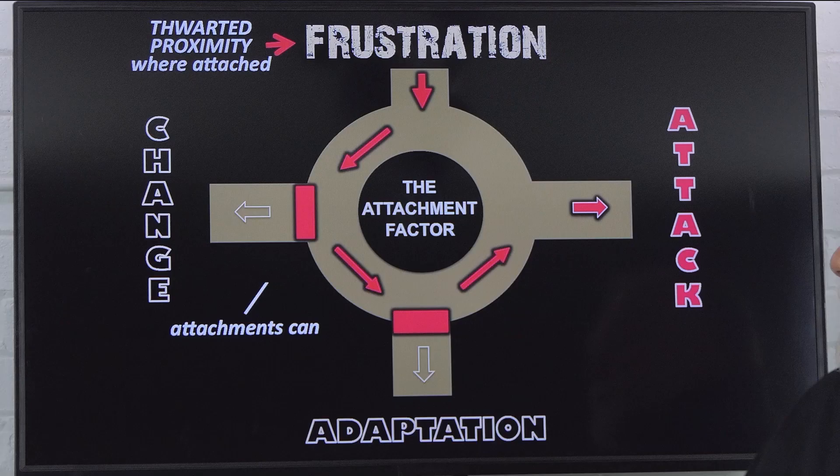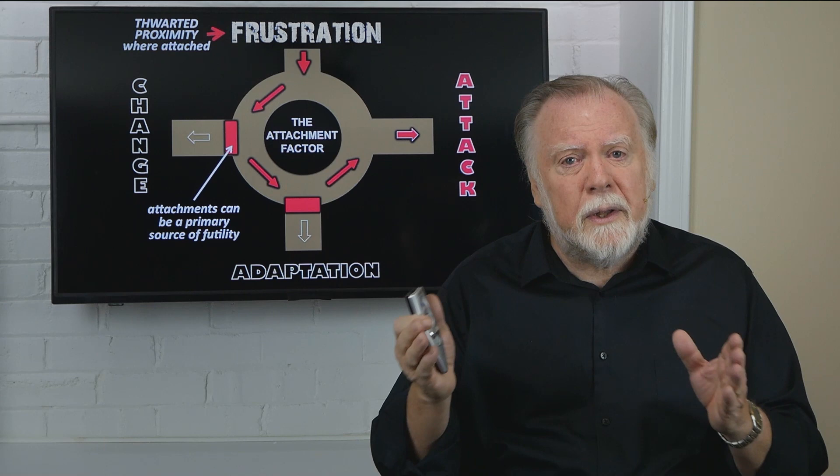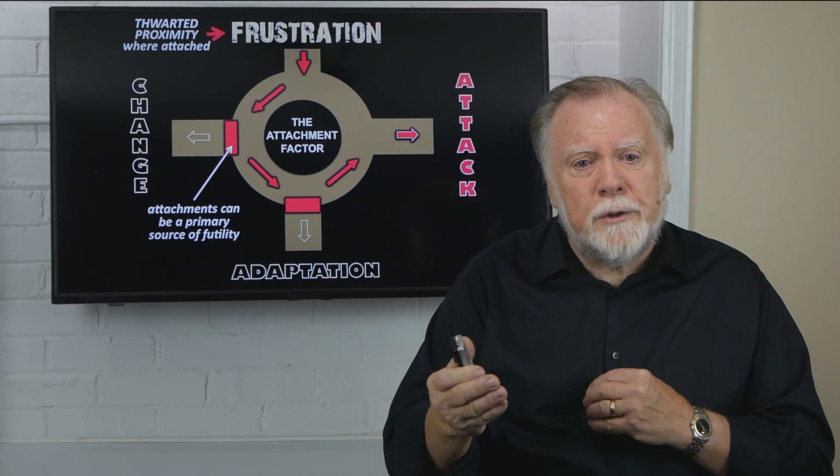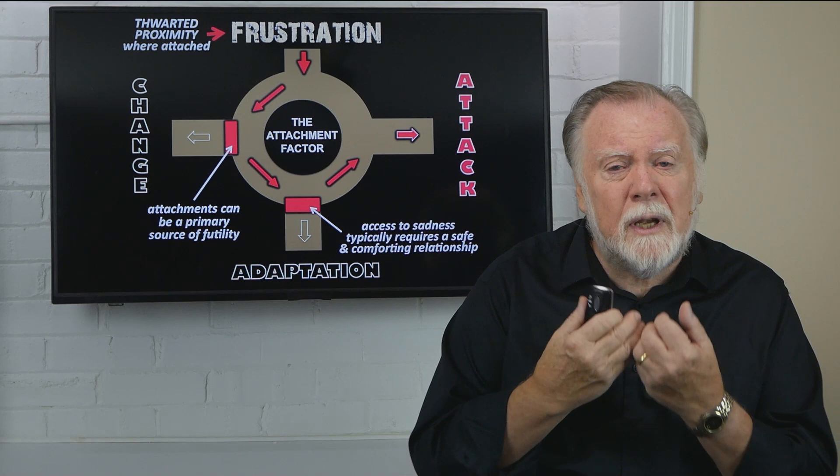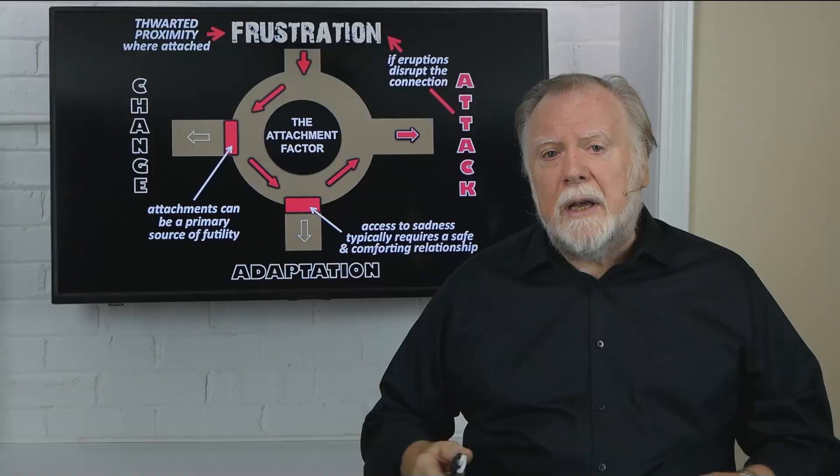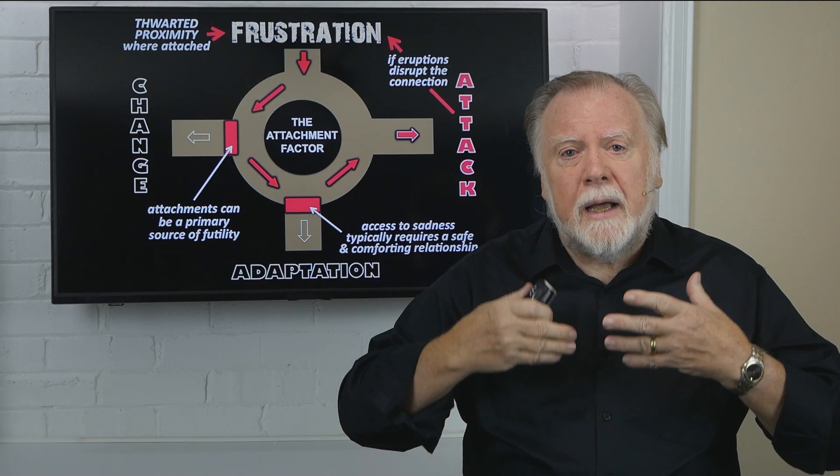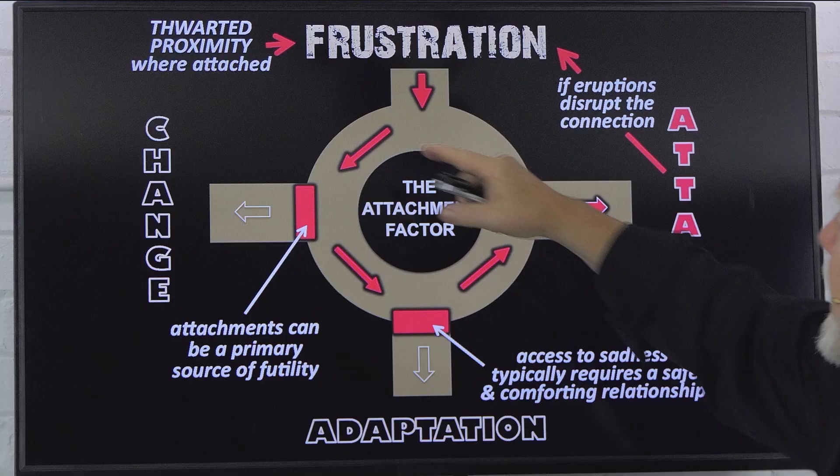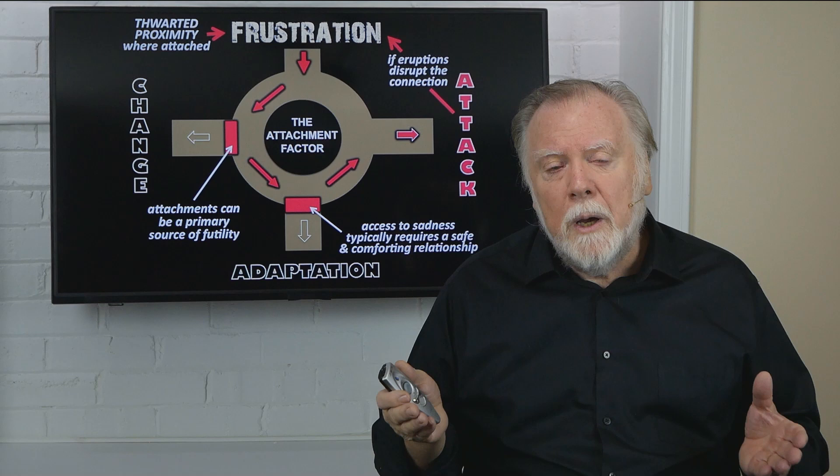Secondly, attachments are also a primary source of futility. We can control many things, but we can't control whether somebody likes us or wants to be with us or will hold on to us or even invite us into their existence. So attachment is a huge source of futility. And of course, sadness is a very tender emotion. Most of us only feel safe to feel sad when we're in the company of those that we're attached to when it's a safe relationship. Many children, many adults have no safe place to cry. And of course, if the eruptions of attack lead to further disconnections, sending to one's room, some way or another, a reaction that increases the separation, breaks the connection, we have the makings of the perfect emotional storm, an escalating cycle. Unfortunately, this is what we've been doing because we haven't understood the story of frustration.